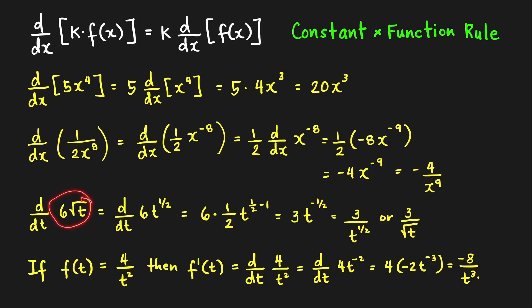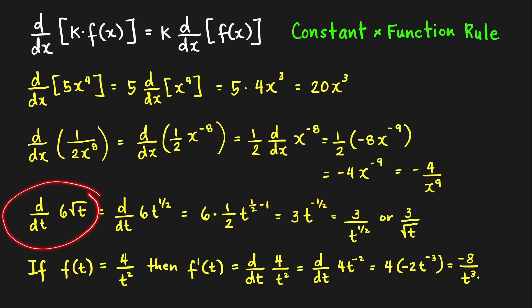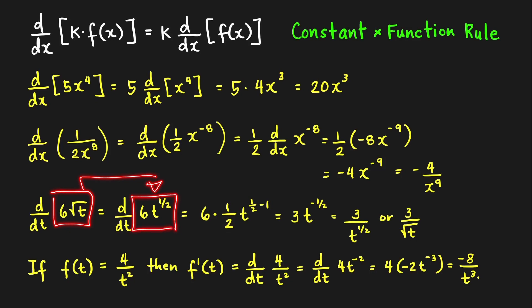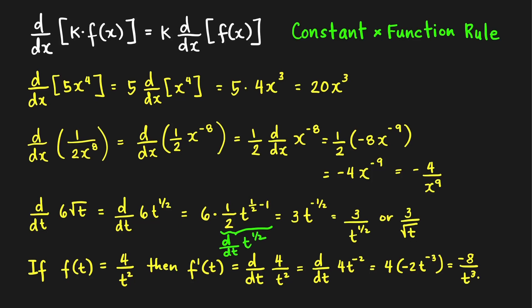Next, let's find the derivative of 6 times the square root of t with respect to t. In our formulas, we can replace the independent variable x with t — for example, if you have a function of time, it's better to use t. We write 6√t as 6t raised to 1 half. Applying the constant times function rule: 6 times the derivative of t raised to 1 half with respect to t. Bringing down the power and subtracting 1 gives 6 times 1 half times t raised to negative 1 half, which equals 3t raised to negative 1 half, or 3 over the square root of t.